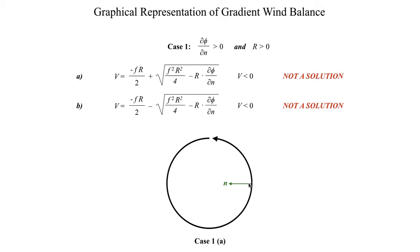So as I go in the positive n-hat direction, which is going towards the center of this hypothetical flow pattern, I'm going towards an area of higher pressure or higher geopotential. That means I must have higher geopotential at the center of the circulation, and lower geopotential away from the circulation as I go in the opposite direction of the normal axis.